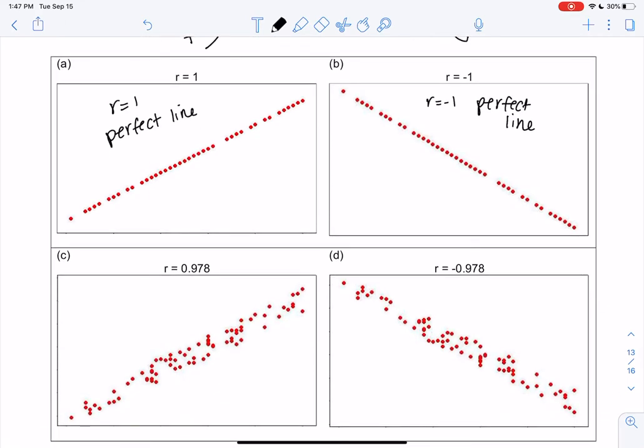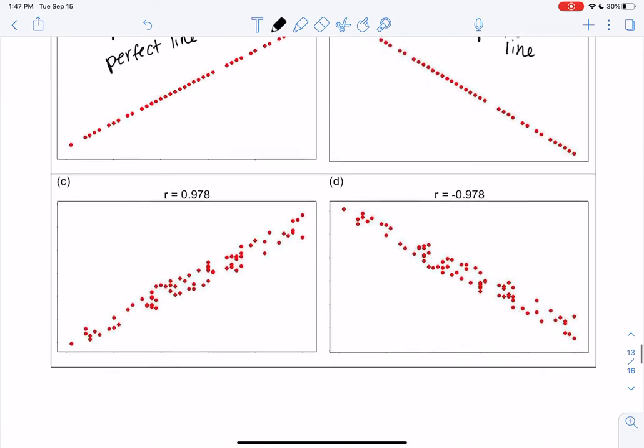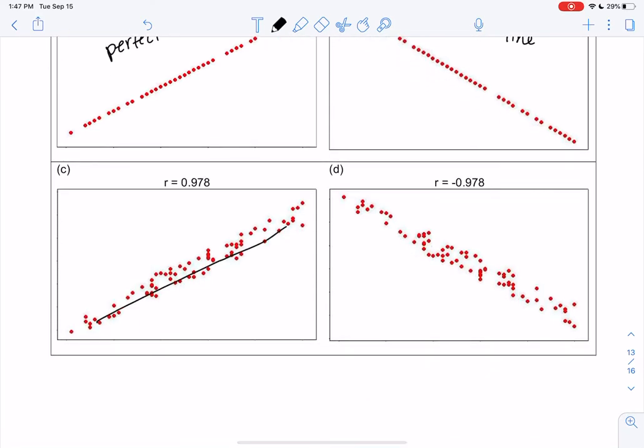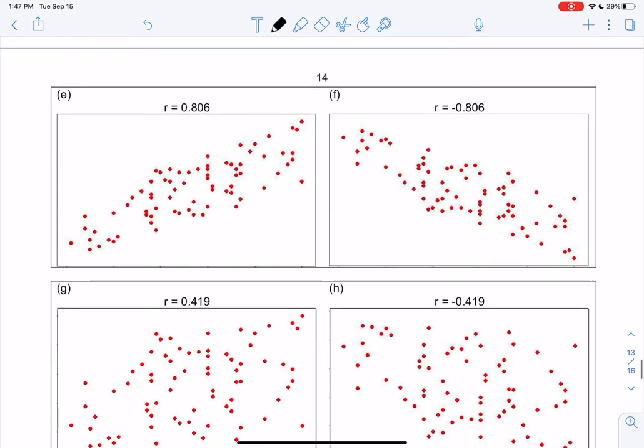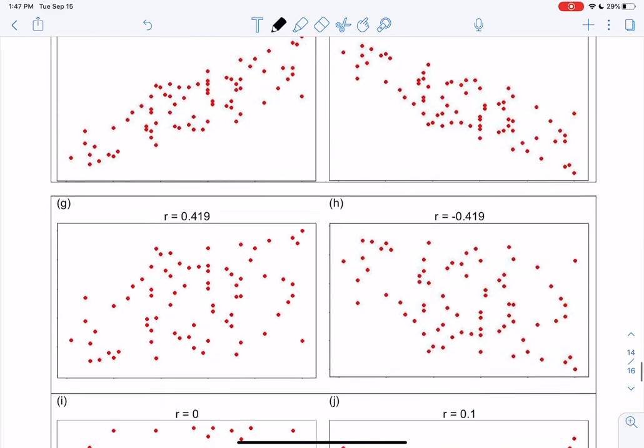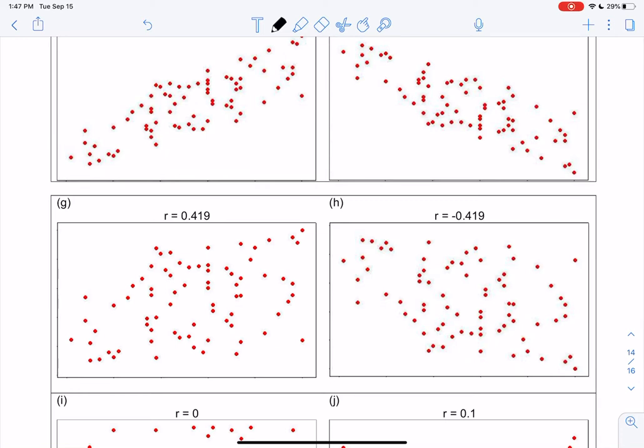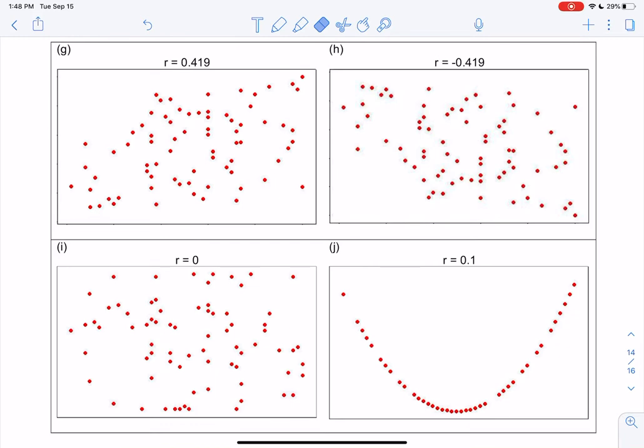So 1 and negative 1 are both perfect lines, but positive goes upward just like for slope and negative goes downward. Then these are just examples. You can kind of see how the relationship is getting a little less strong. 0.978 is still a pretty good line but not perfect. 0.8 is getting less strong, less obvious of a line. As we get to 0.4, it's barely a line but there's still a little bit of a pattern hidden in there. 0 really means there's absolutely no relationship, so there is absolutely no line. And this 0.1 has a really strong relationship, it's just not a linear relationship, so that's why it's so low. If we did a different type of regression for parabolas, it would be really strong, close to 1. But for lines, it's not even close.